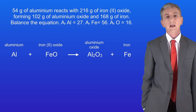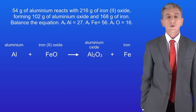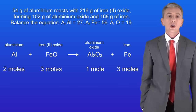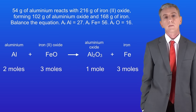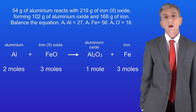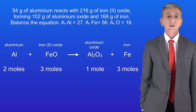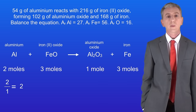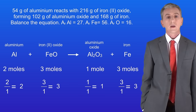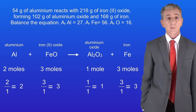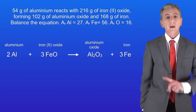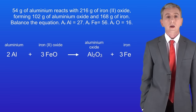First we need to calculate the number of moles of all of the chemicals. We've got 2 moles of aluminium, 3 moles of iron oxide, 1 mole of aluminium oxide and 3 moles of iron. Now we've got to work out the ratio of these numbers by dividing by the smallest number, in this case 1. 2 divided by 1 is 2, 3 divided by 1 is 3, 1 divided by 1 is 1, and 3 divided by 1 is 3. These are our balancing numbers and we can put them into the equation. Remember that we don't write 1 in chemical equations.